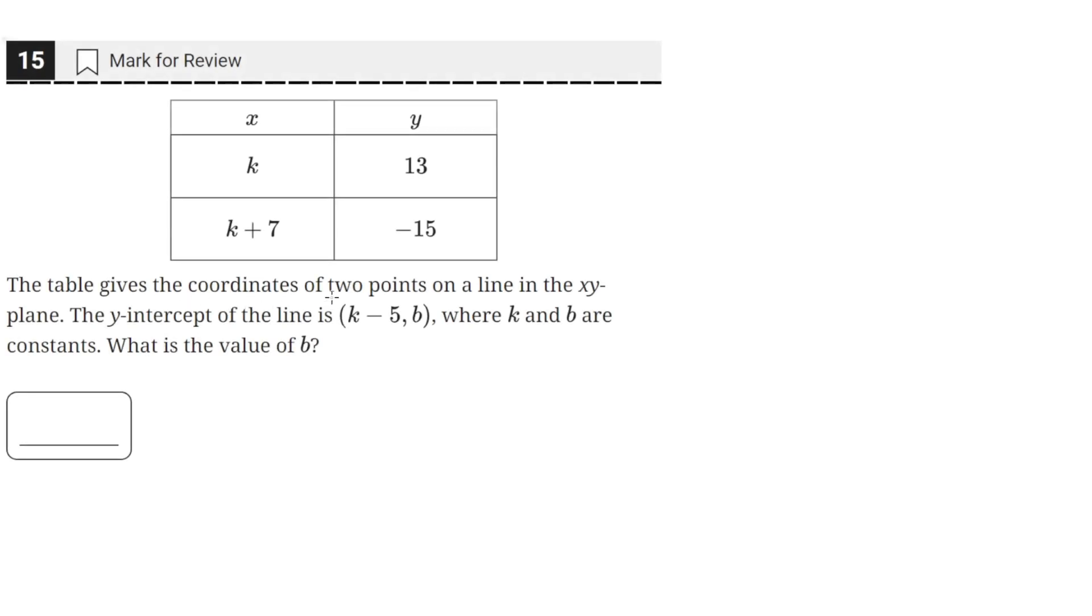The table gives the coordinates of two points on a line in the xy-plane. The y-intercept of the line is (k-5, b), where k and b are constants. What is the value of b?